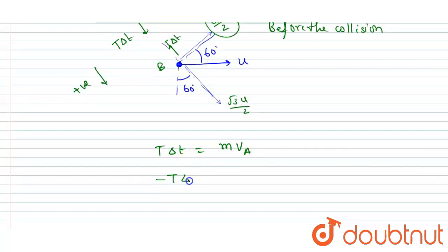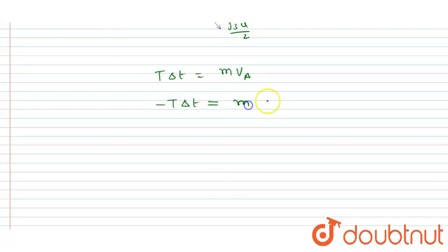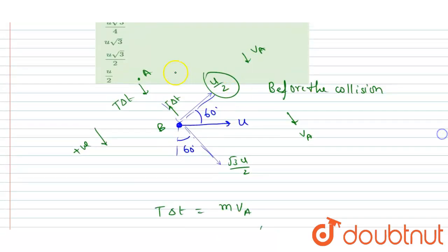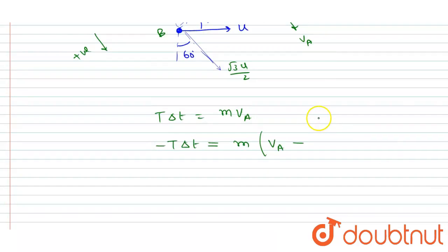And since it is acted by minus T dt, equals final momentum minus initial momentum. So finally it will have the same velocity as that of A along the string, because they both are attached to a string. So along the string they will be having the same velocity since the string is inextensible.